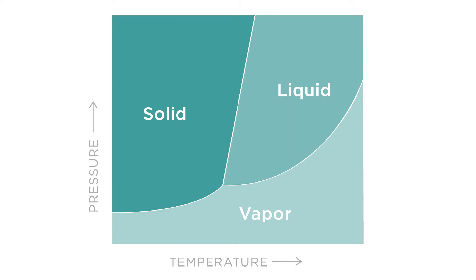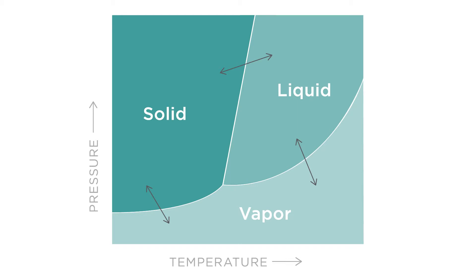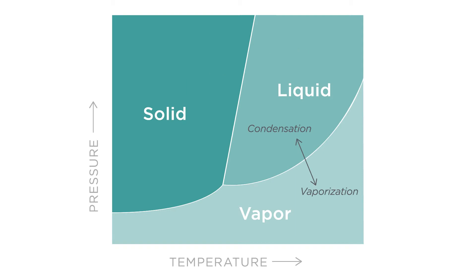The lines between these phases are the phase boundary lines. These are the points where we have an equilibrium state between a solid and a liquid, a liquid and a gas, or at low pressures a solid and a gas. Each of these boundary lines gives us a phase change: between solids and liquids we have melting or freezing; between liquid and gas we have vaporization and condensation; and between solids and gas, sublimation and deposition.